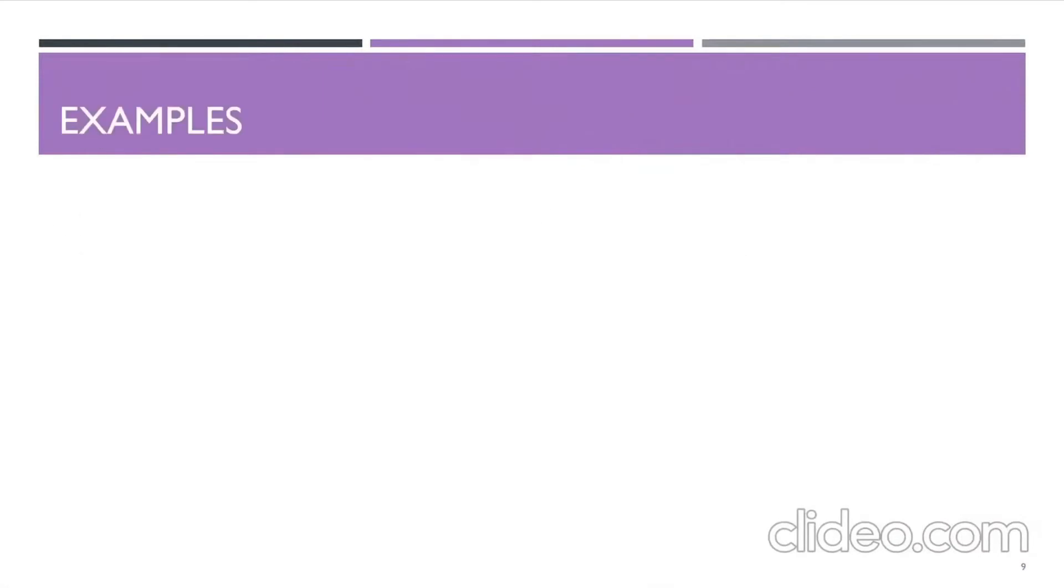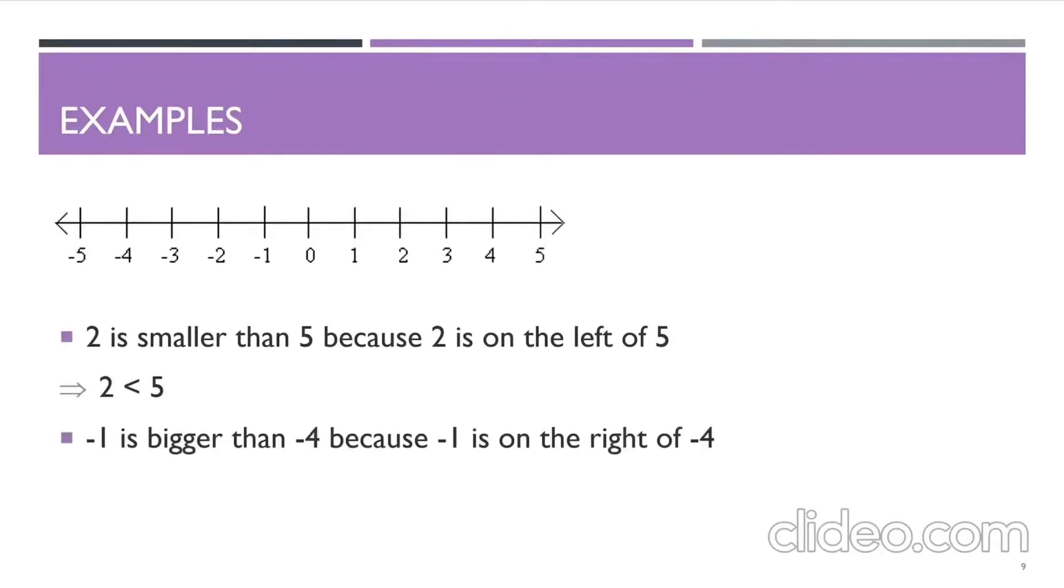Secondly, we have some examples. 2 is smaller than 5 because 2 is on the left of 5. Minus 1 is bigger than minus 4 because minus 1 is on the right of minus 4.